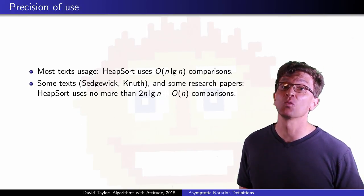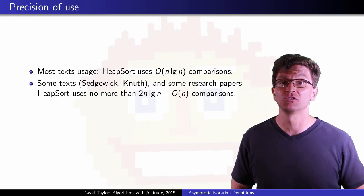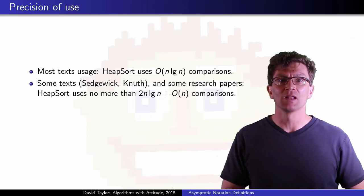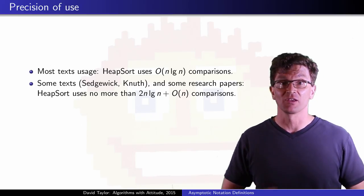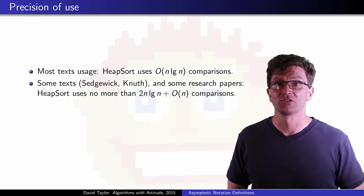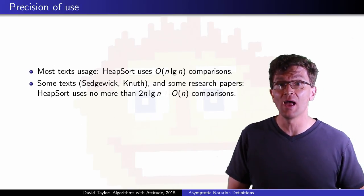There are a couple of different ways that asymptotic notation is used. Most texts would say, let's say for HeapSort, HeapSort uses O(n log n) comparisons, but some texts, like Sedgewick and Knuth and some research papers, are more precise.